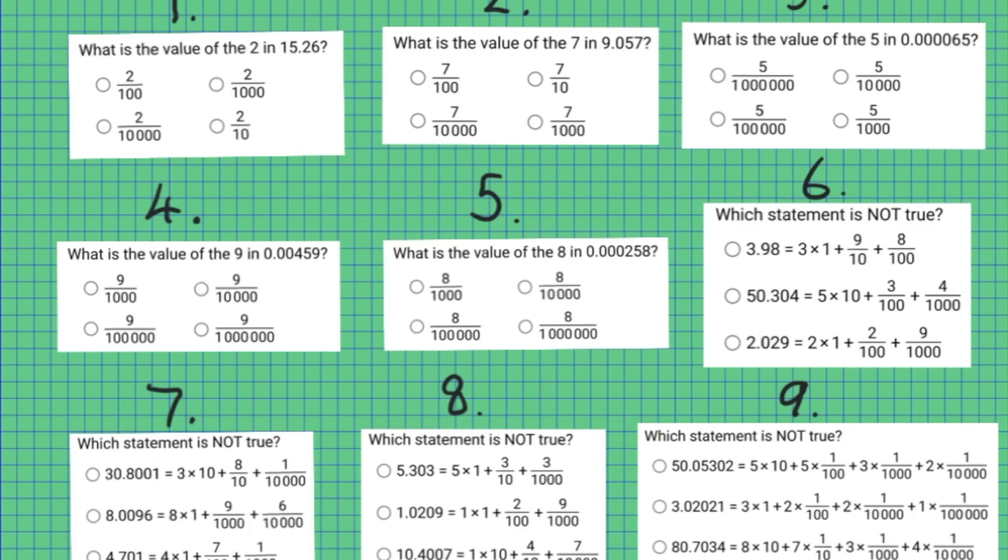So we've got our own examples here. We have 9 of them. Let's have a look. We'll do one together, number 1. We have, what is the value of the 2 in 15.26? Is it 2 hundredths, 2 thousandths, 2 ten thousandths, or 2 tenths? So if we look at where the place value is, there's the tens, there's the ones, then the tenths and the hundredths. So the 2 is in the tenths, so it must be 2 tenths. So in that case we would circle that one, or you could put a tick in the box. Or you could just write down, so you'll probably do this on your piece of paper, right next to the number 1, you'd write 2 tenths.